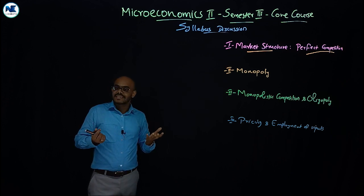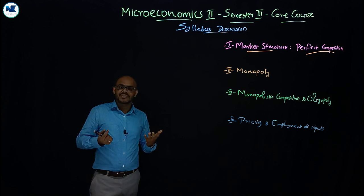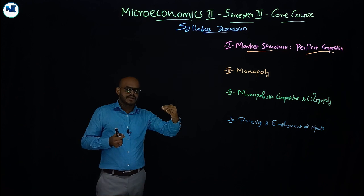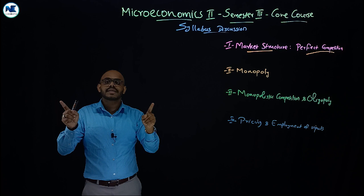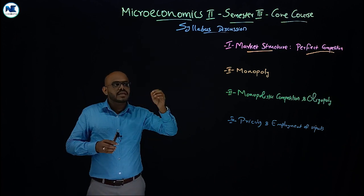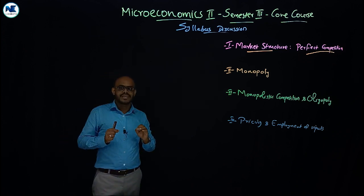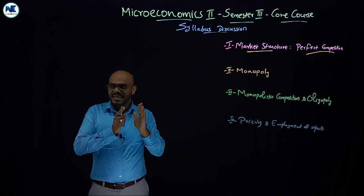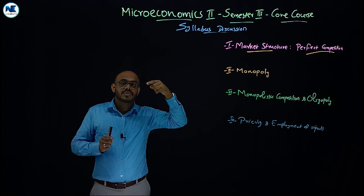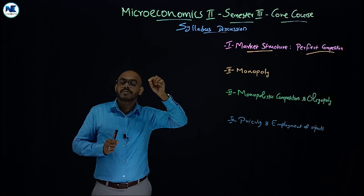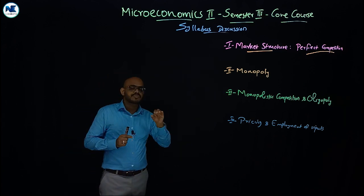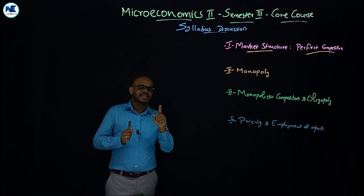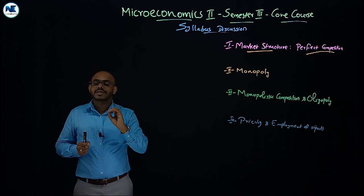Then price discrimination, excess capacity, selling cost, product differentiation, kinked demand curve analysis, and so on. For microeconomics you have four modules overall. The syllabus also covers diagram revision — X-axis, Y-axis — and the relationship between average cost and marginal cost, which I already discussed in microeconomics one, fourth module theory of production and cost.